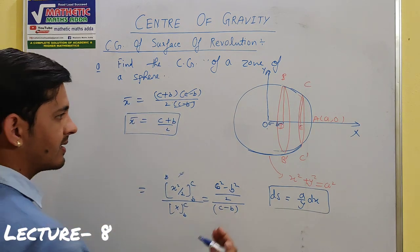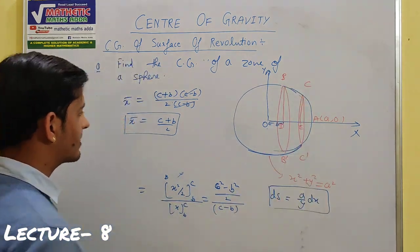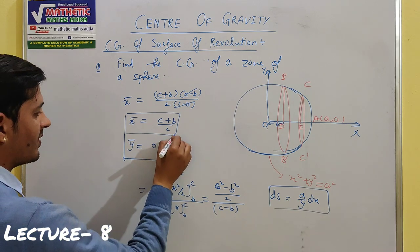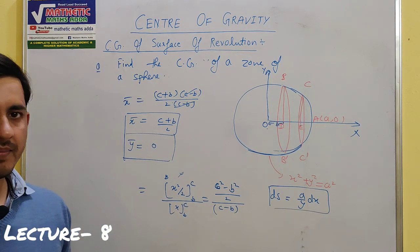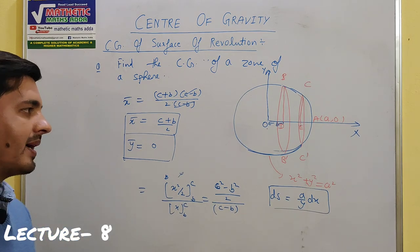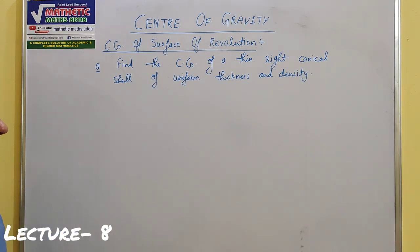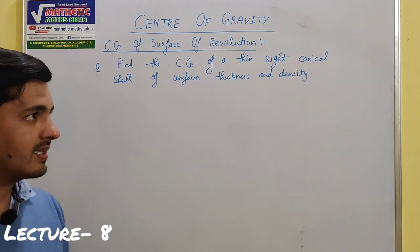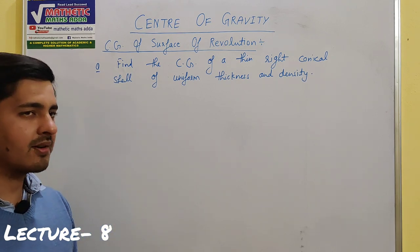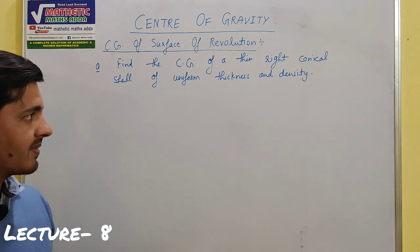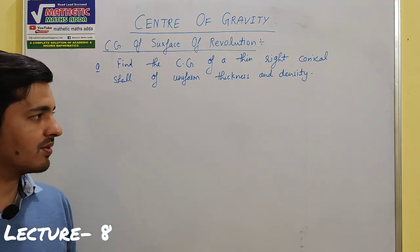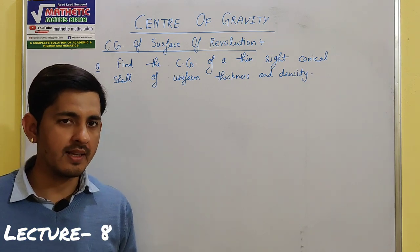तो x_bar = (b + c)/2। और जैसा कि formula में बताया था, क्योंकि यह x axis के about rotate हो करके बन रही है, इसकी center of gravity x axis में होगी, तो y_bar = 0। ध्यान रखना है कि जितने भी center of gravity के numericals हमने अब तक किए हैं हर एक में density uniform ली है, इसीलिए हम rho से rho cancel कर देते हैं। अगर density uniform नहीं दी होगी तो density की value रखनी होगी।